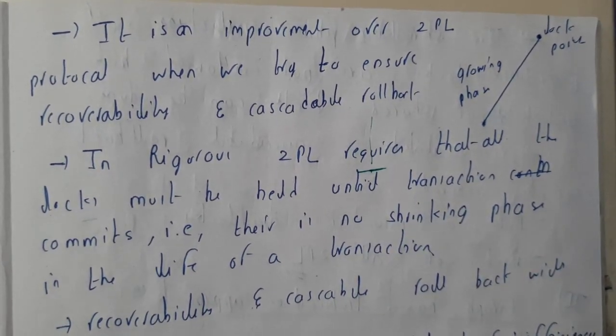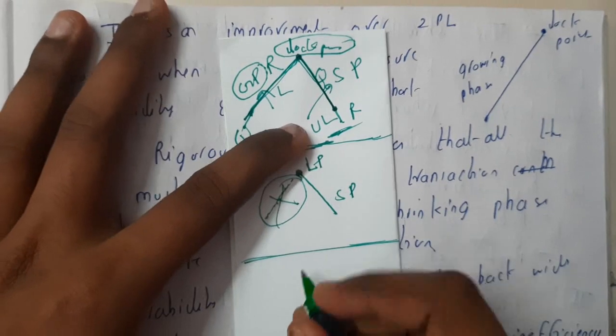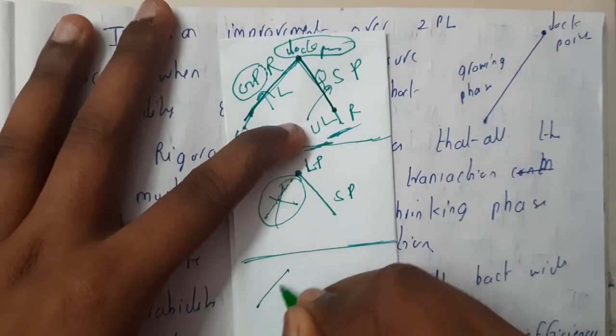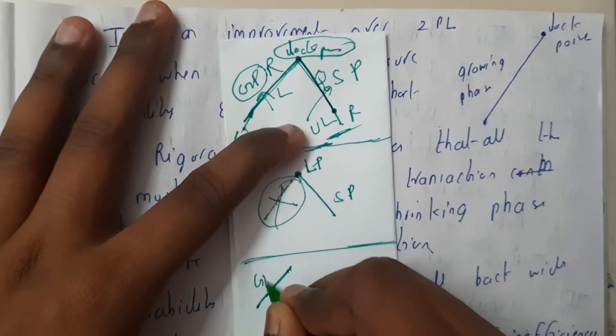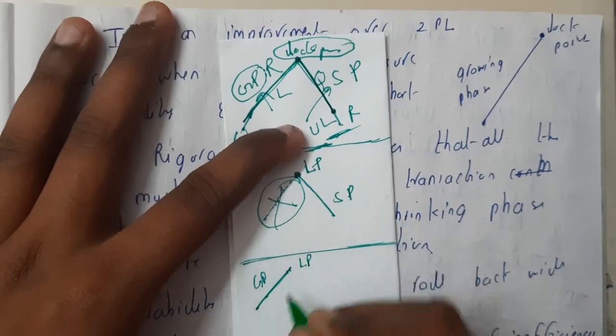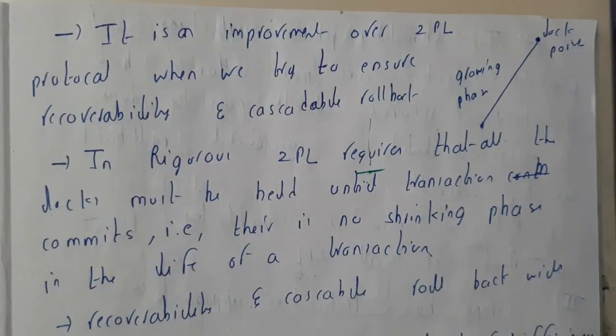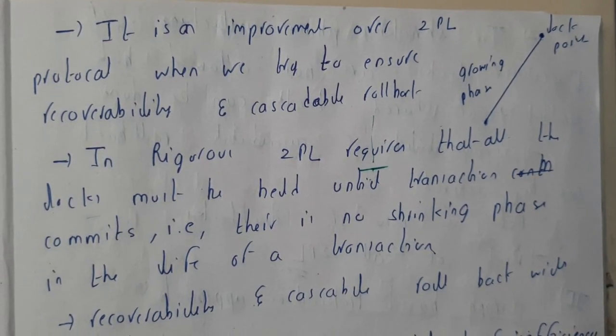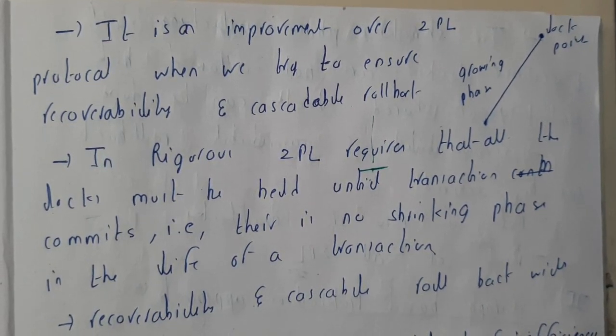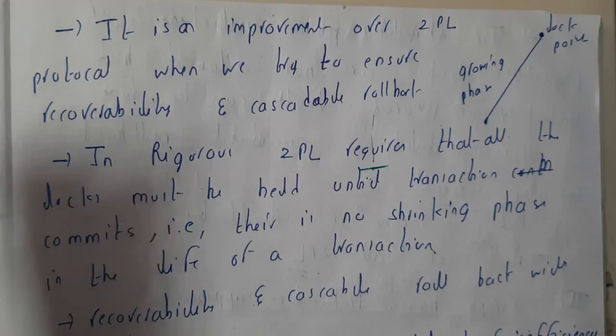That's why we have only the growing phase till the lock point. After that, automatically according to our requirement, we unlock the locks.